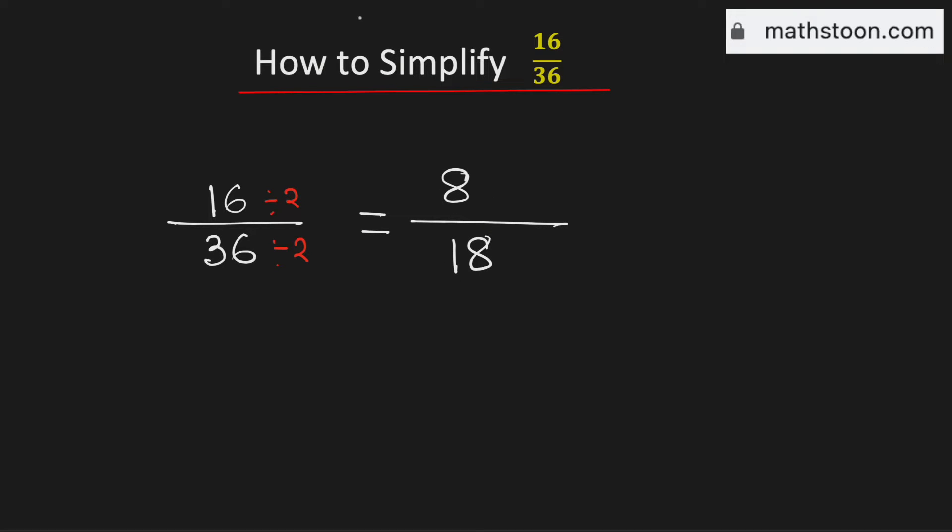Again see that we can divide them by 2 because 2 divides both the numbers 8 and 18. And dividing them by 2 we will get 4 in the numerator and 9 in the denominator.